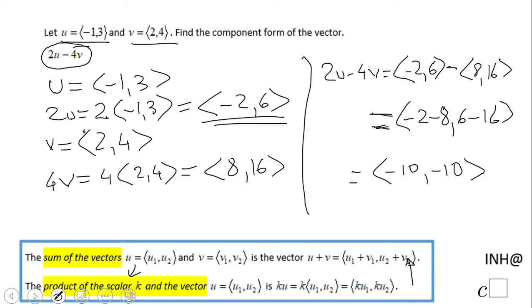This is the vector 2u minus 4v, which is <-10, -10>.